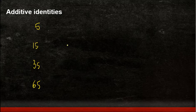If you have any whole number, let's say 5, 15, 35, 65, or any of the numbers which you have, when you add 0 to this given whole number, what do you get?